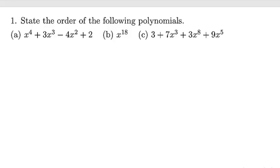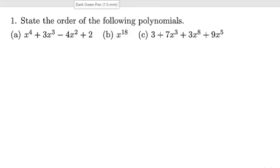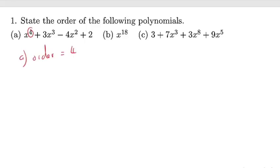The order of a polynomial is simply the value of the highest power in that particular polynomial. For example, part a that we have here, since the highest power of x is 4, the order of this polynomial is 4. Simple as that.